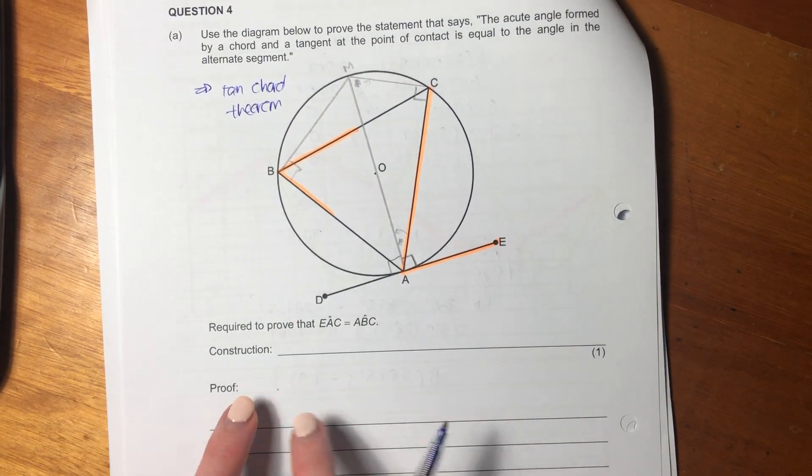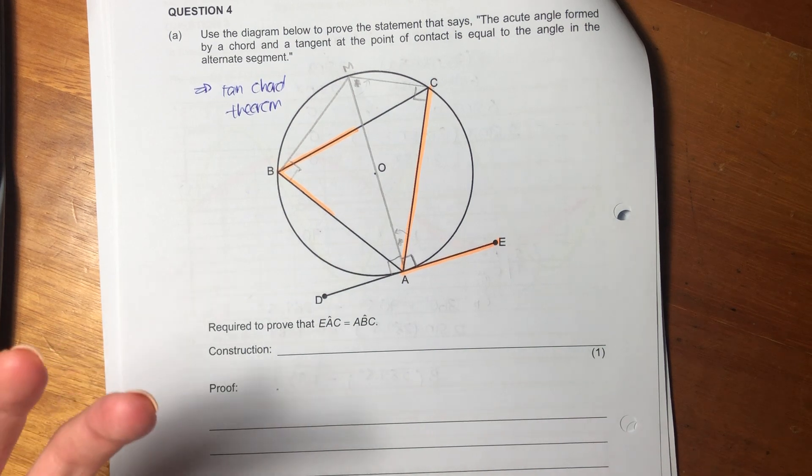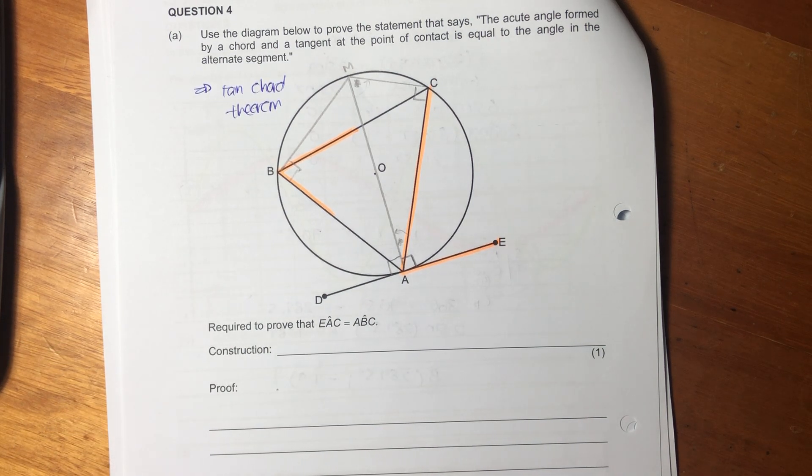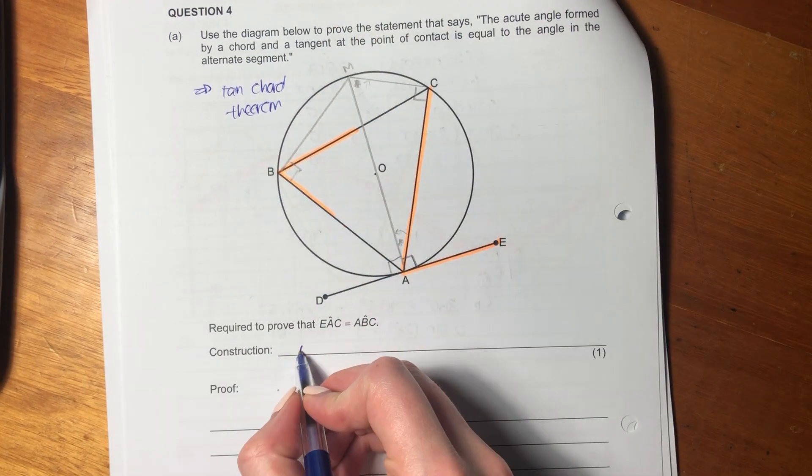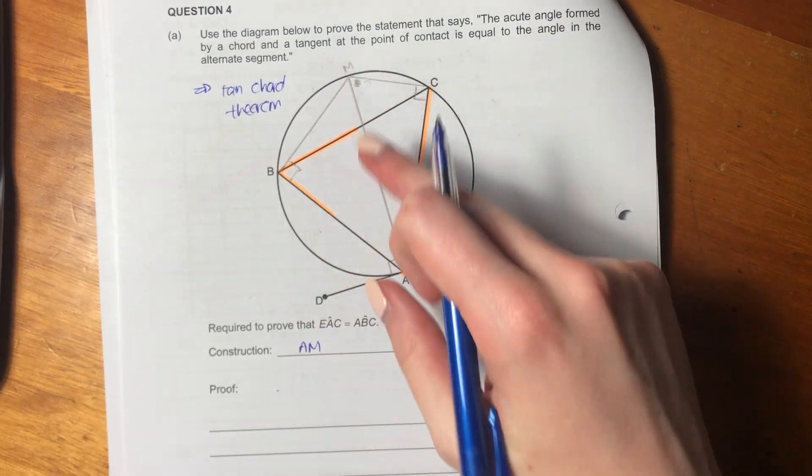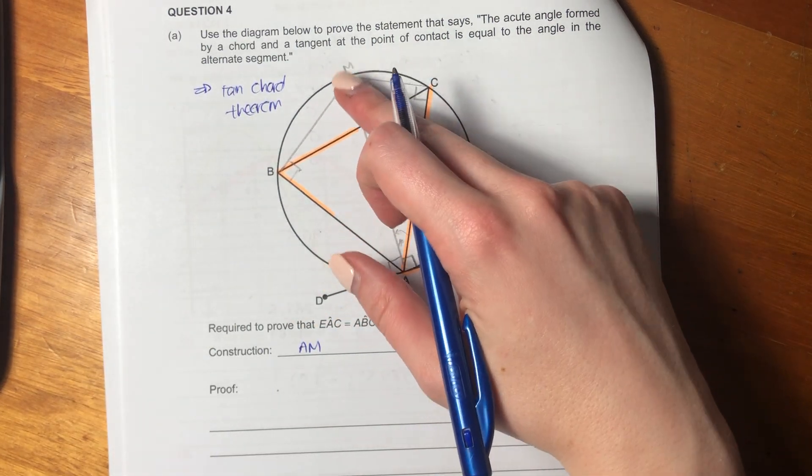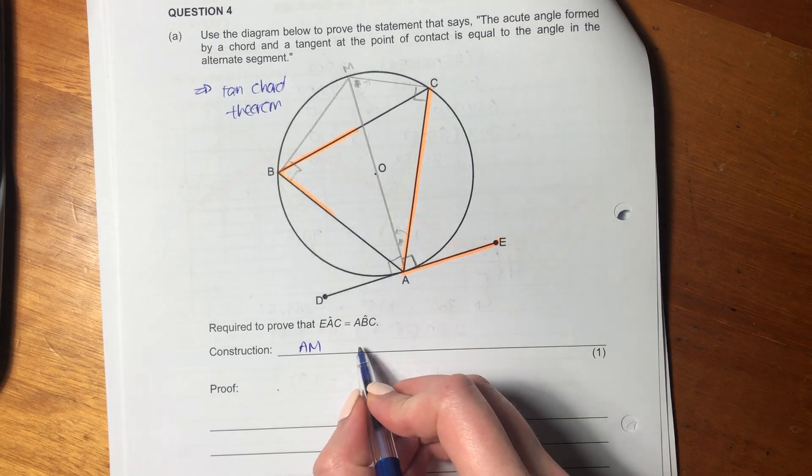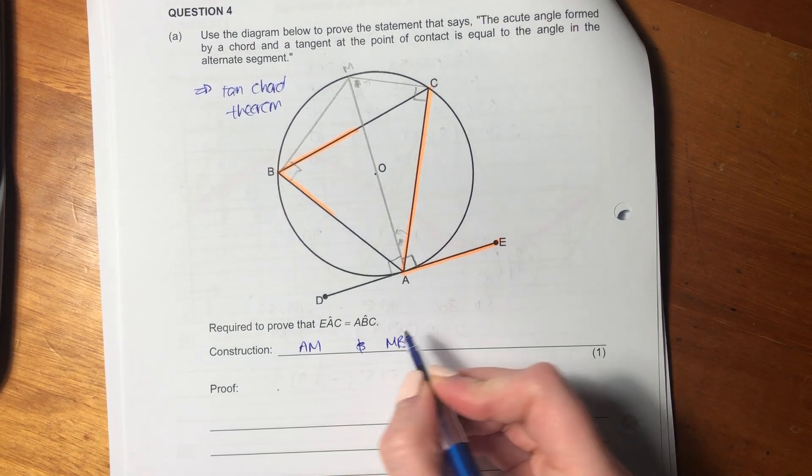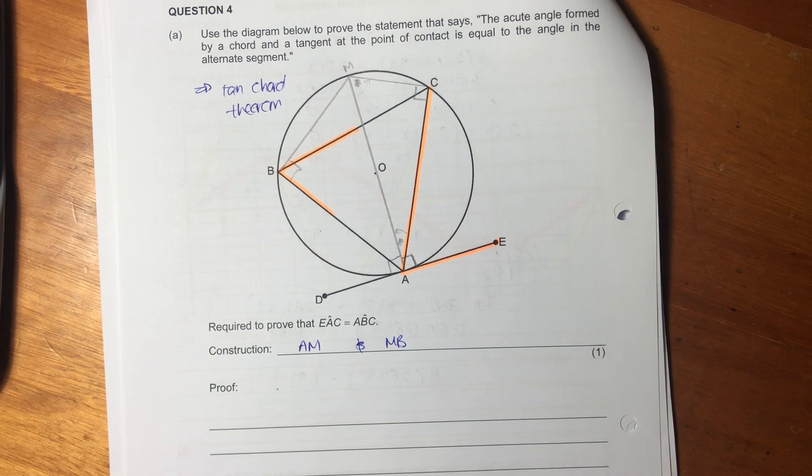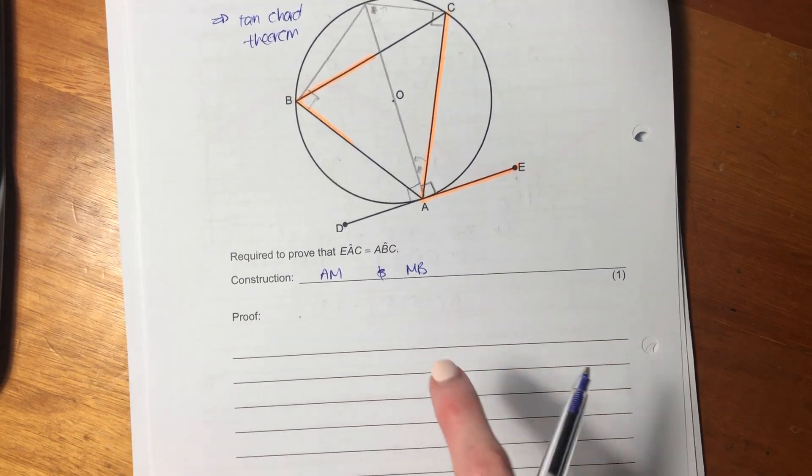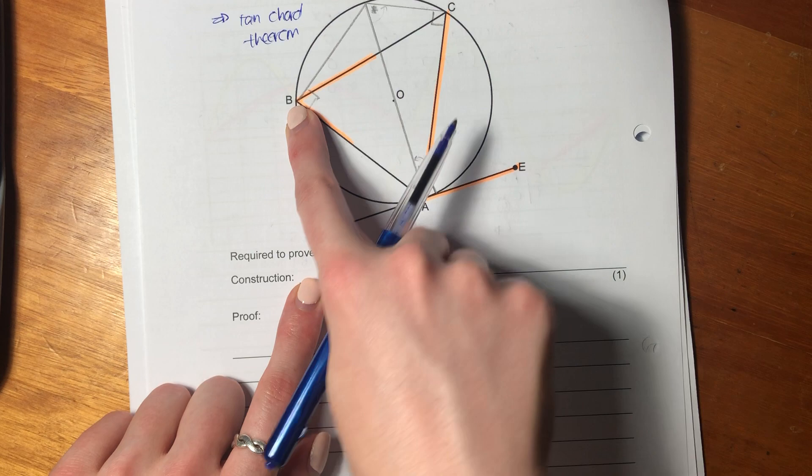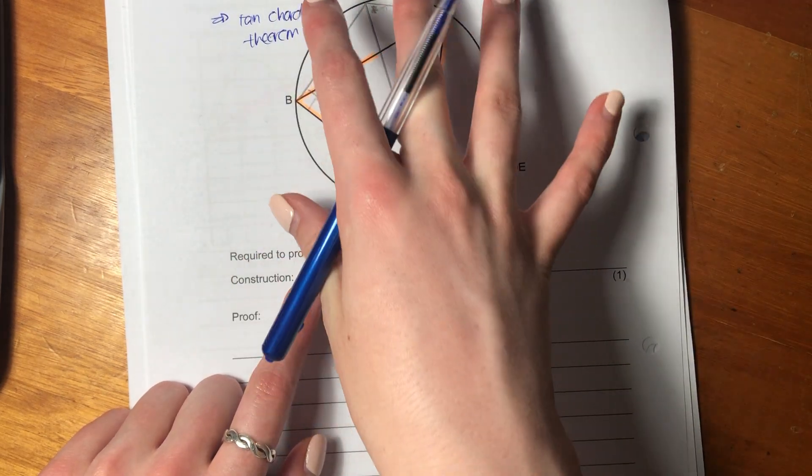What's really kind of them is they've actually told us that we need to do that. If they hadn't sort of signposted us, we might not have known that. So the construction I've drawn in is AM, and then I've also drawn in MB. So there's many ways you can do this. And if you go to the memo, you'll see alternative ways. I'm just doing the way that seems most intuitive to me.